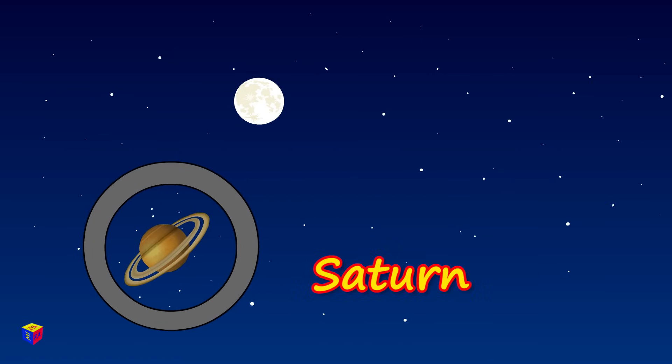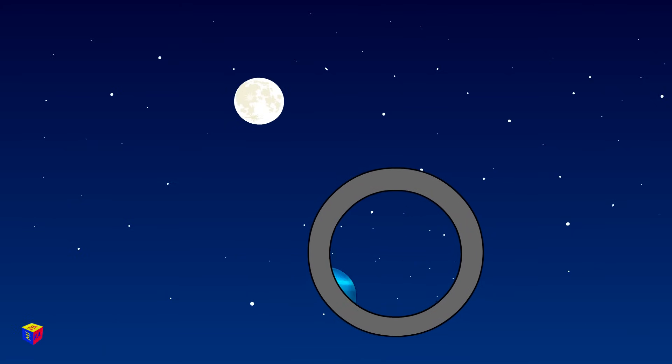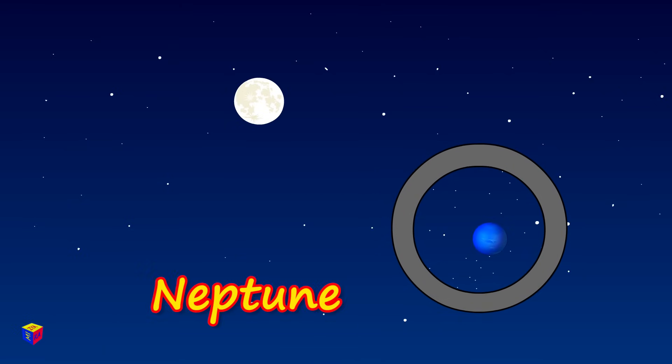Saturn. It is famous for its rings. Uranus. This planet has a blue-green hue. And the most distant planet is Neptune. It's blue.